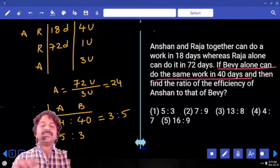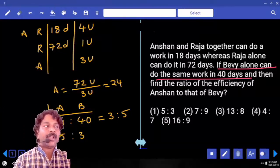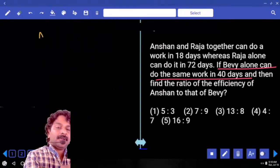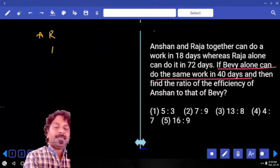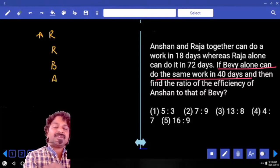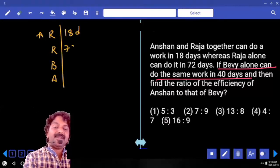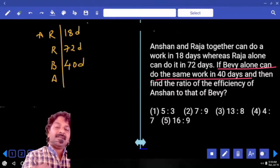Now, the same question you can use even units method also. First, Anshan, Raja, Baby, Anshan. Both take 18 days, 72 days, 40 days.